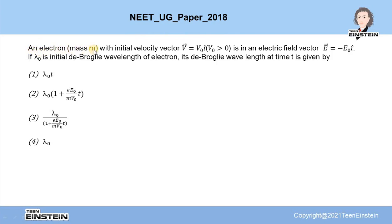In this problem it is stated that an electron of mass m with initial velocity vector v equals v0 i cap, where v0 is greater than 0, is in an electric field vector E equals minus E0 i cap. Now, if lambda 0 is the initial de Broglie wavelength of the electron, then what will be the de Broglie wavelength of the electron at time t?